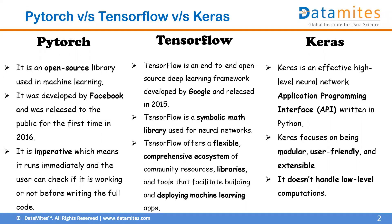TensorFlow is a symbolic math library used for neural networks to handle complex computations processed by the neural net. Keras focuses on modular programming. PyTorch is imperative, meaning that even before executing the code, PyTorch will assess whether the given snippet of code will execute successfully or throw an error. This flexibility is referred to as imperative in PyTorch.